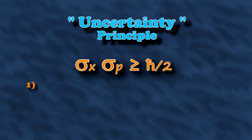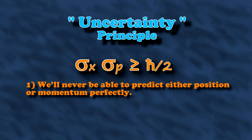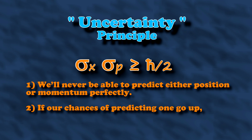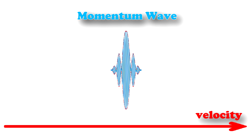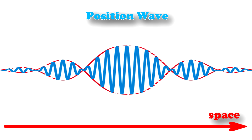It tells you something about how well you can predict what a measurement will be. So this principle says two things. One, we'll never be able to predict either position or momentum perfectly. And two, if our chances of predicting one go up, then the chances of predicting the other go down. In other words, if the wave for motion looks like this, then the one for position looks more like this, meaning it doesn't even make sense to ask where the particle is.